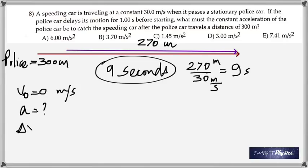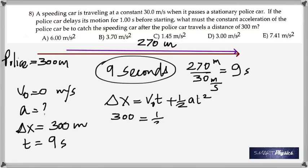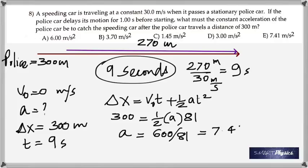Now that we have the time: the police car starts from rest (v₀ = 0), needs to cover 300 meters in 9 seconds. Substituting into Δx = ½at², you get acceleration = 7.41 m/s². The key step is figuring out the time is 9 seconds, since the speeding car moved 270 meters during that interval.